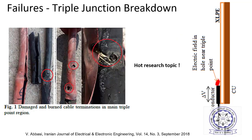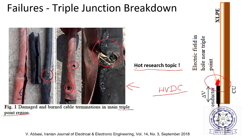Some case reports of failures occurring at the triple junction are shown — this is an active research topic. At the exact junction of three materials — semiconductor, XLPE insulation, and the cable — breakdown occurs. HVDC terminations are not perfect until now and research needs to be done. Even for AC, many failures occur at this triple junction point region.